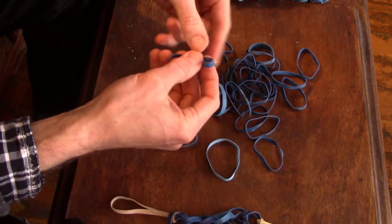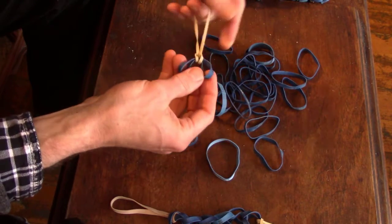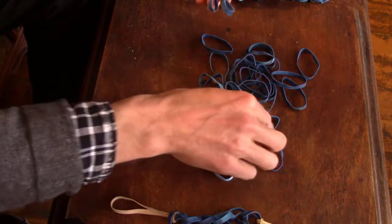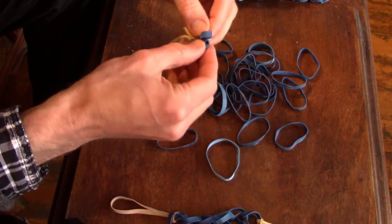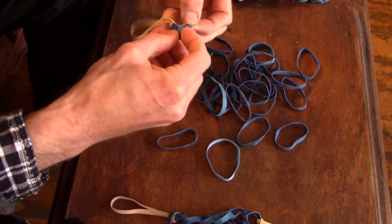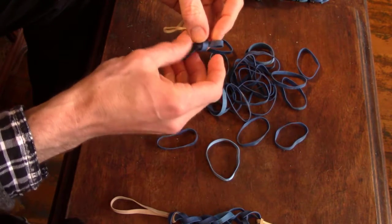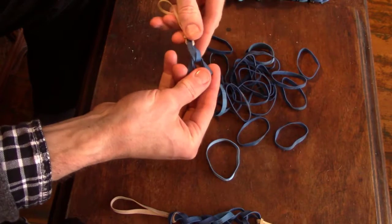Now we're going to do what I call the lock loop. We're going to simply insert an elastic end through the other two loose ends, effectively tying it off and holding it in place.